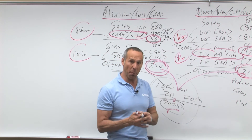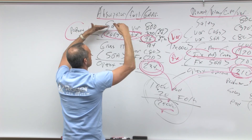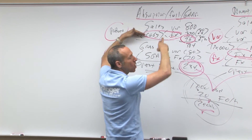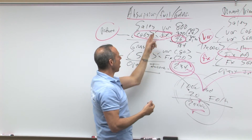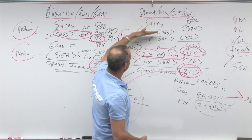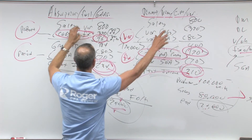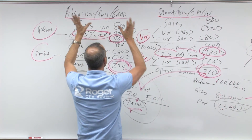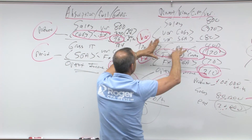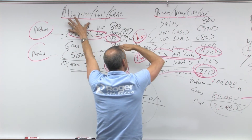To summarize: absorption costing is GAAP — it's external reporting. You have sales minus cost of goods sold equals gross profit, minus SG&A equals operating income. SG&A is always a period cost; cost of goods sold is a product cost. Over here, direct/variable/prime/contribution costing separates variable from fixed: sales minus variable costs equals contribution margin, minus fixed costs equals income. This method is for internal reporting only — it is not GAAP.